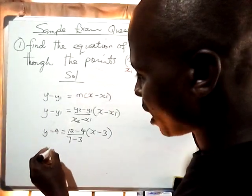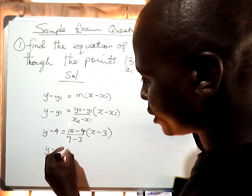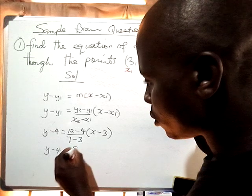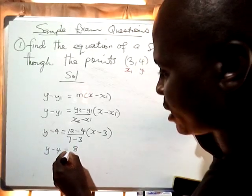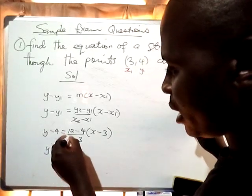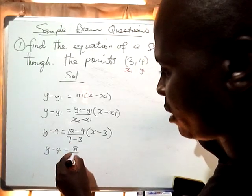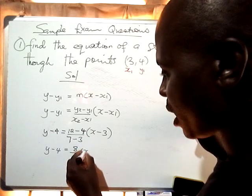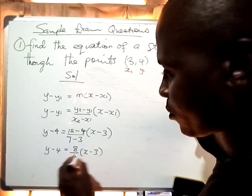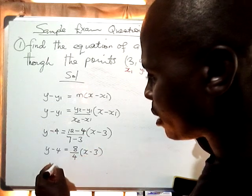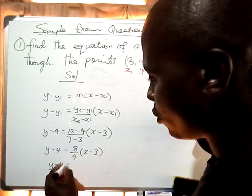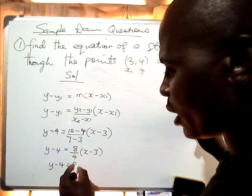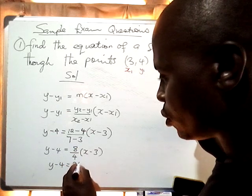So it would be y minus 4 equals 12 minus 4, which is 8, over 7 minus negative 3, which is 10 — wait, 7 minus negative 3 is 10. Actually the answer simplifies: 8 over 4 equals 2, then open bracket x minus 3.